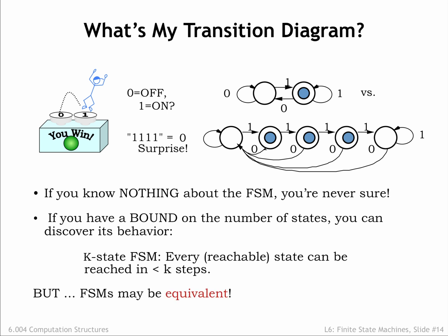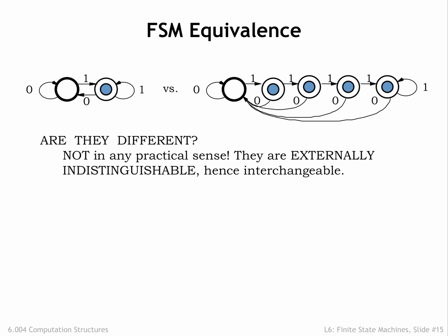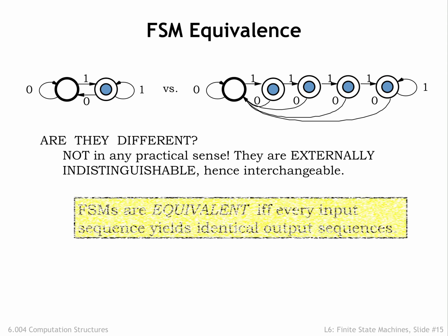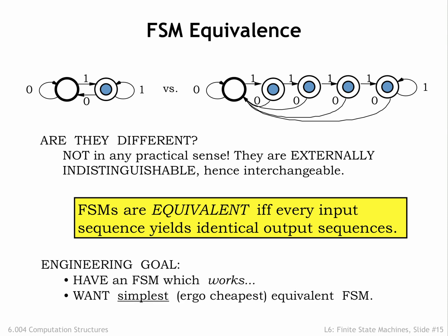Our answer is also complicated by the observation that FSMs with different numbers of states may be equivalent. Here are two FSMs — one with two states, one with five states. Are they different? Well, not in any practical sense. Since the FSMs are externally indistinguishable, we can use them interchangeably. We say that two FSMs are equivalent if and only if every input sequence yields identical output sequences from both FSMs. So as engineers, if we have an FSM, we would like to find the simplest equivalent FSM.